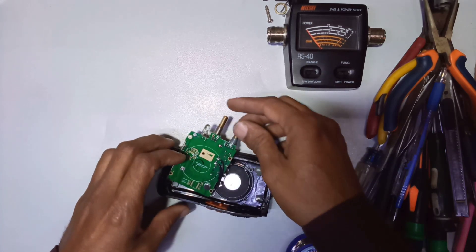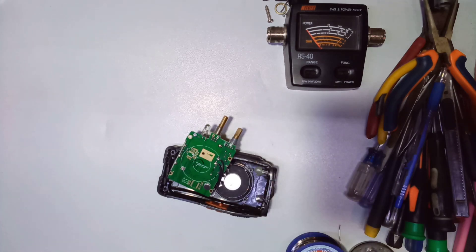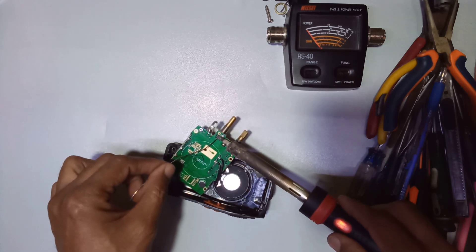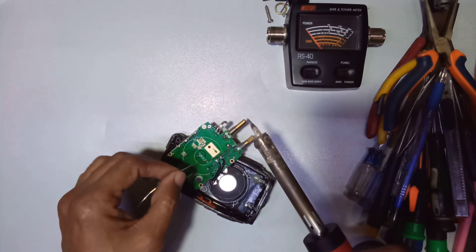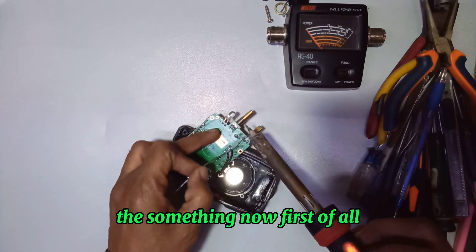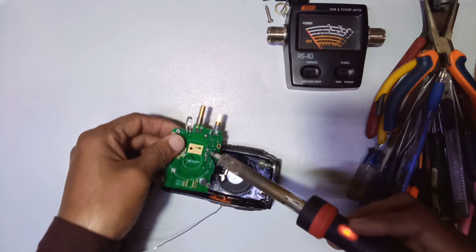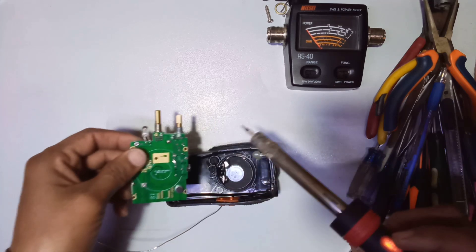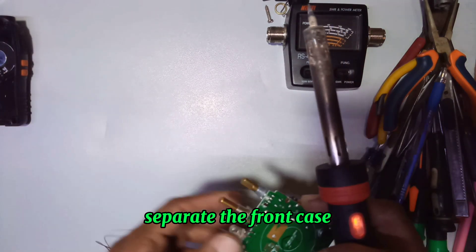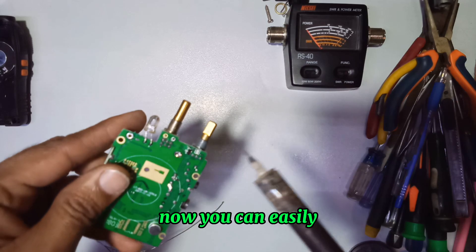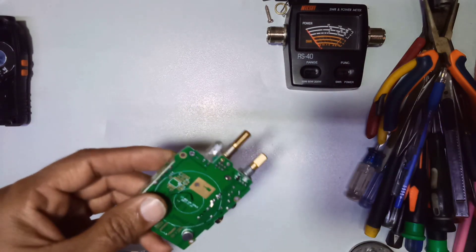First of all, remove this ring. Now separate the front case from the back. You see, now you can easily work on this radio.